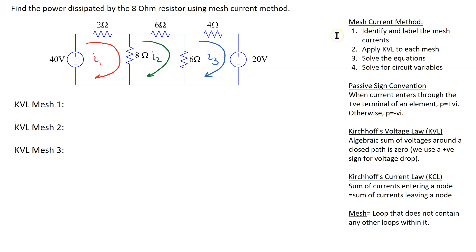The first step is to identify and label the mesh currents. Recall that a mesh is a loop that does not contain any other loops within it. For this given circuit there are three meshes and these currents are labeled I1, I2, and I3. Here clockwise direction has been assumed for all the meshes. The direction, whether anti-clockwise or clockwise, does not matter, and this will be illustrated later in this video.